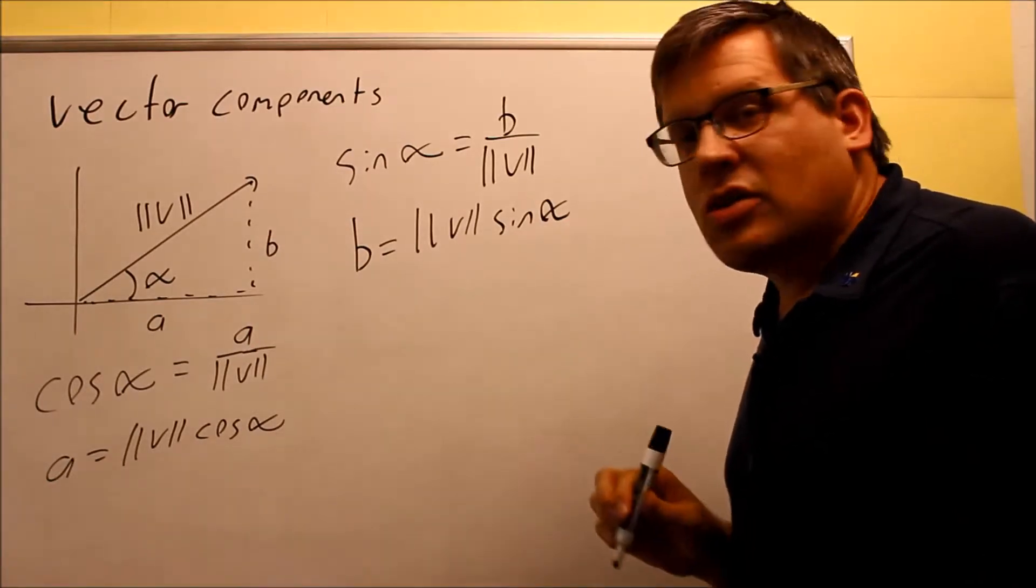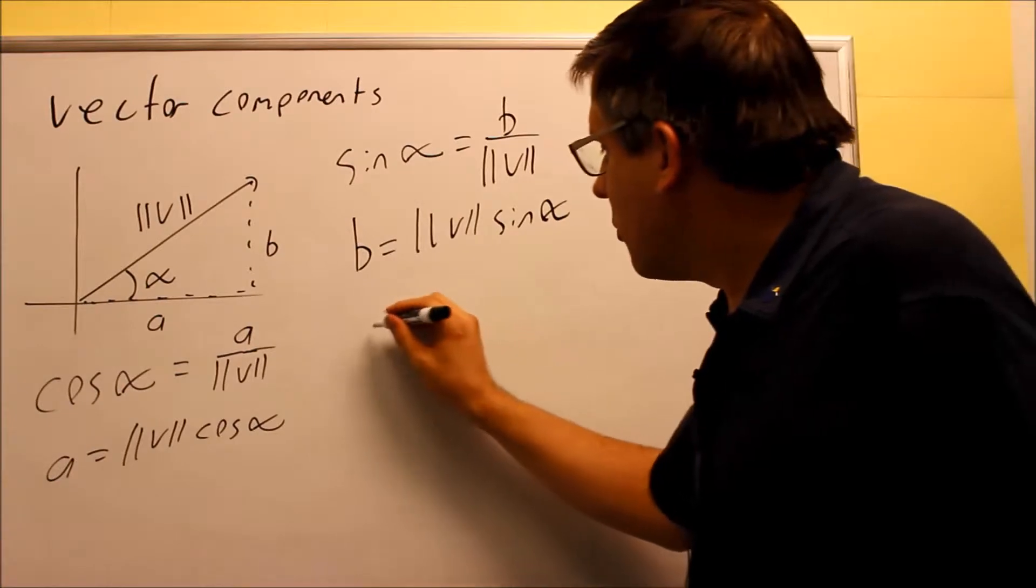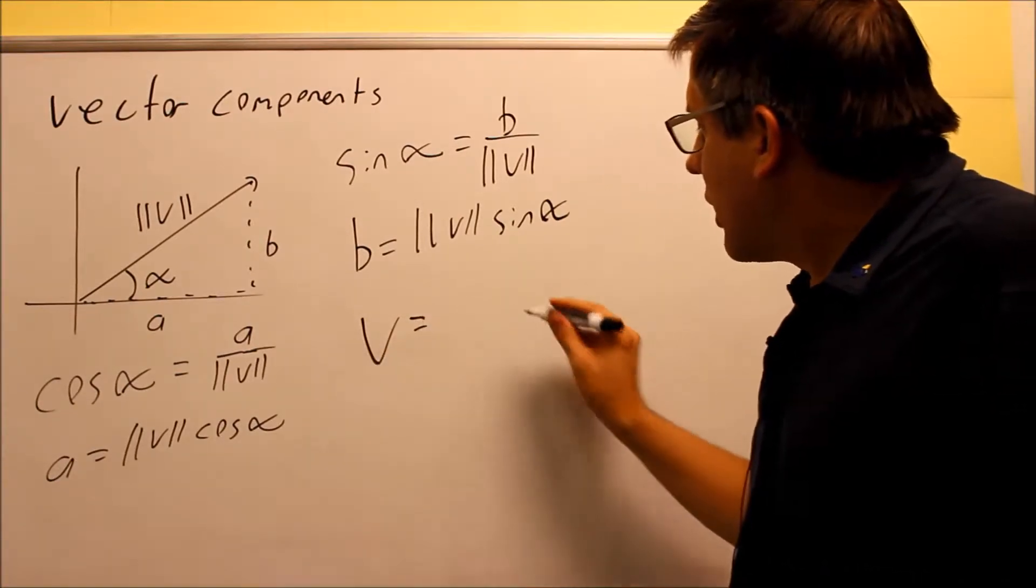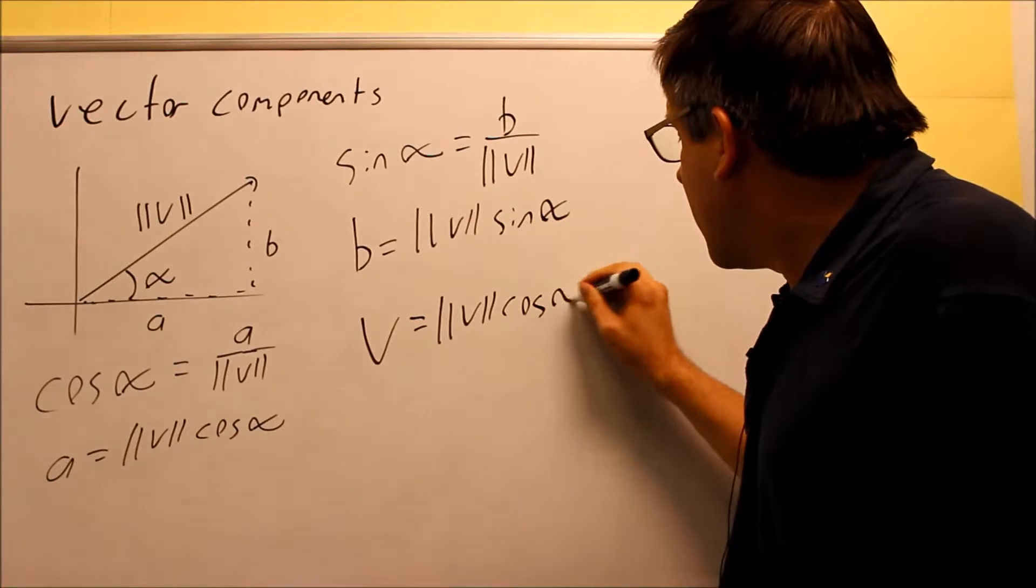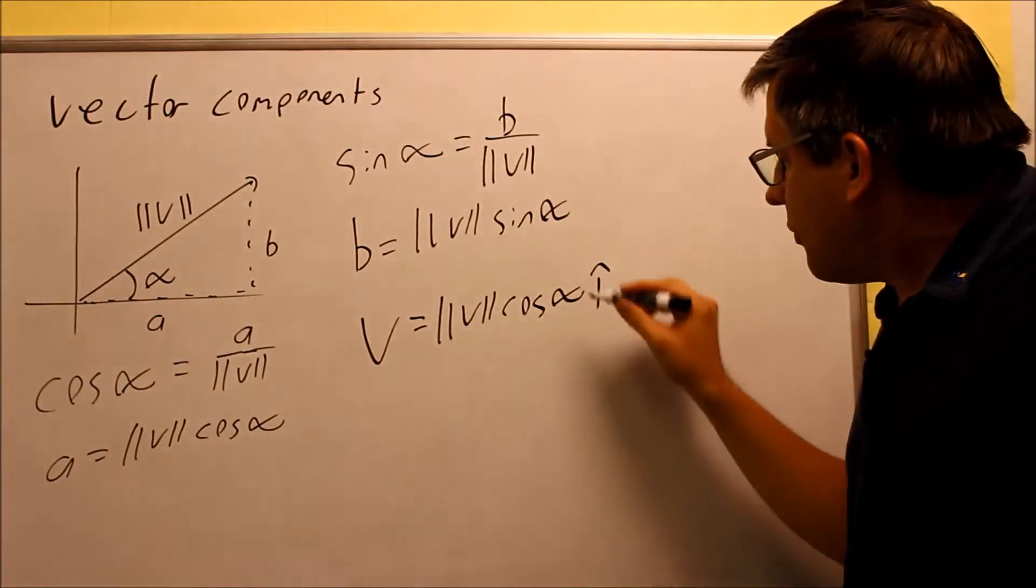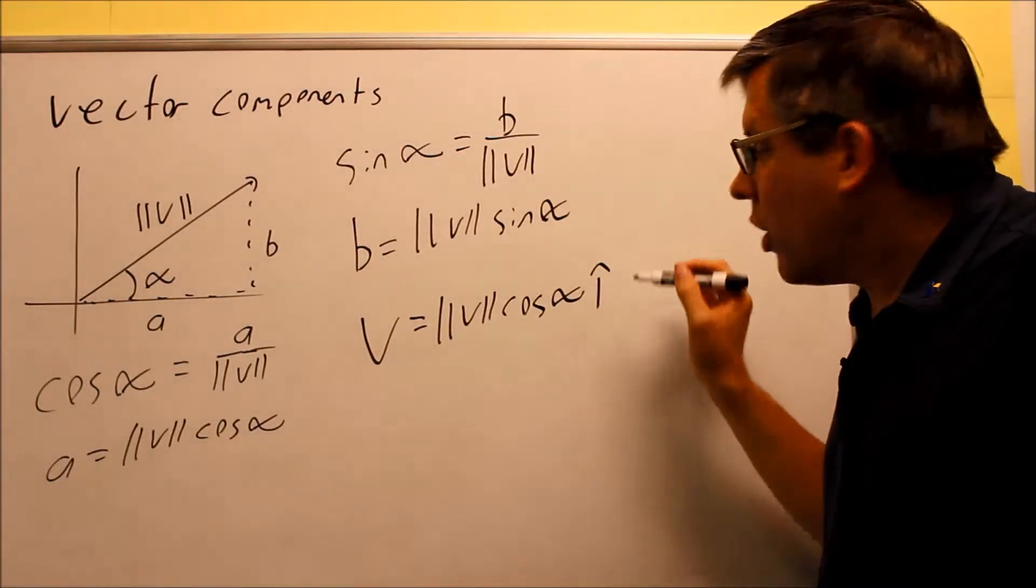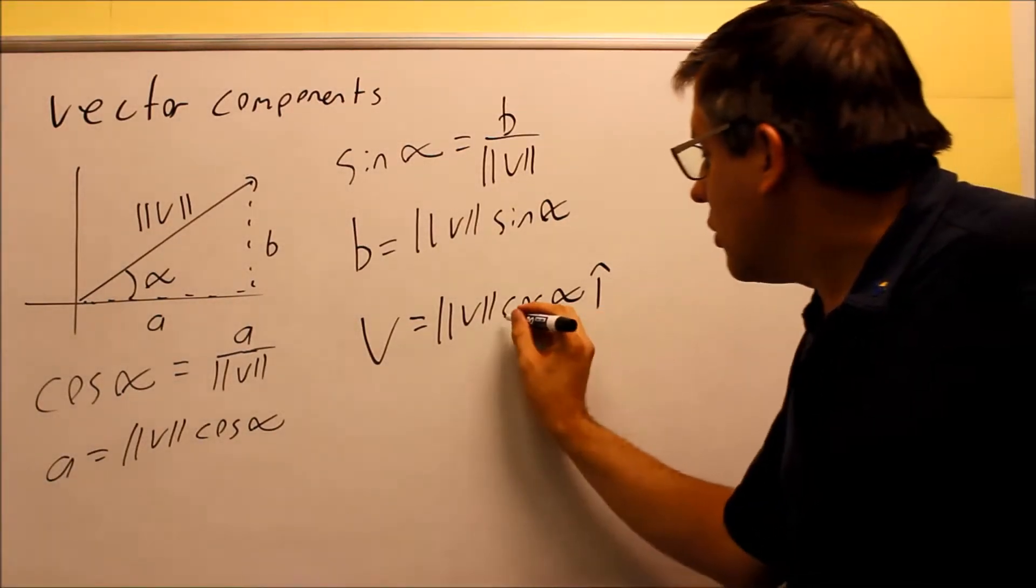So now I can put these together and write this in the vector component form. My vector V now can be written this way, magnitude of V cosine alpha, that's the I, that's the horizontal component. Again, I could write that also as a bold if I wanted to, so either notation I can use for that.